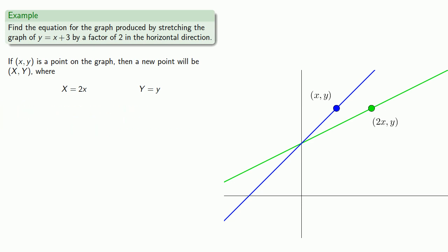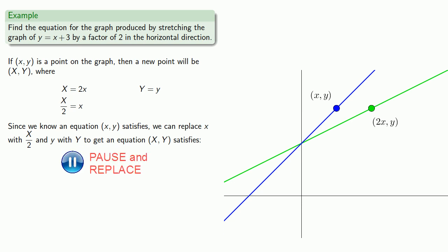As with all other transformations, we'll solve in terms of the original variables x and y. We know an equation that the original x and y satisfies, so we can replace lowercase x with X/2 and lowercase y with Y to get an equation that capital X and Y satisfies. And since capital X and Y are just coordinates, we can write them using their lowercase forms to get our new equation.